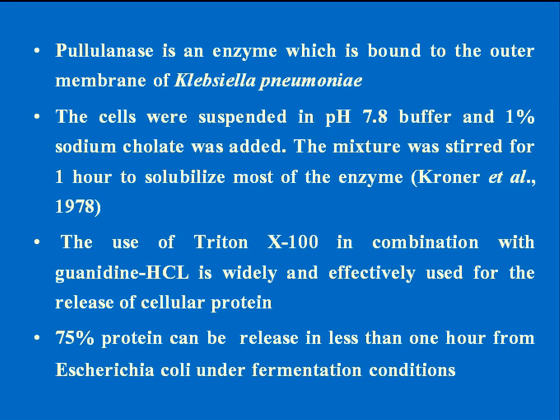Pullulanase is an enzyme bound to the outer membrane of Klebsiella pneumoniae. The cells were suspended in pH 7.8 buffer and one percent sodium cholate was added; the mixture was stirred for one hour to solubilize most of the enzyme. The use of Triton X-100 in combination with guanidine HCl is widely and effectively used for the release of cellular protein — 75 percent protein can be released in less than one hour from E. coli under fermentation conditions.